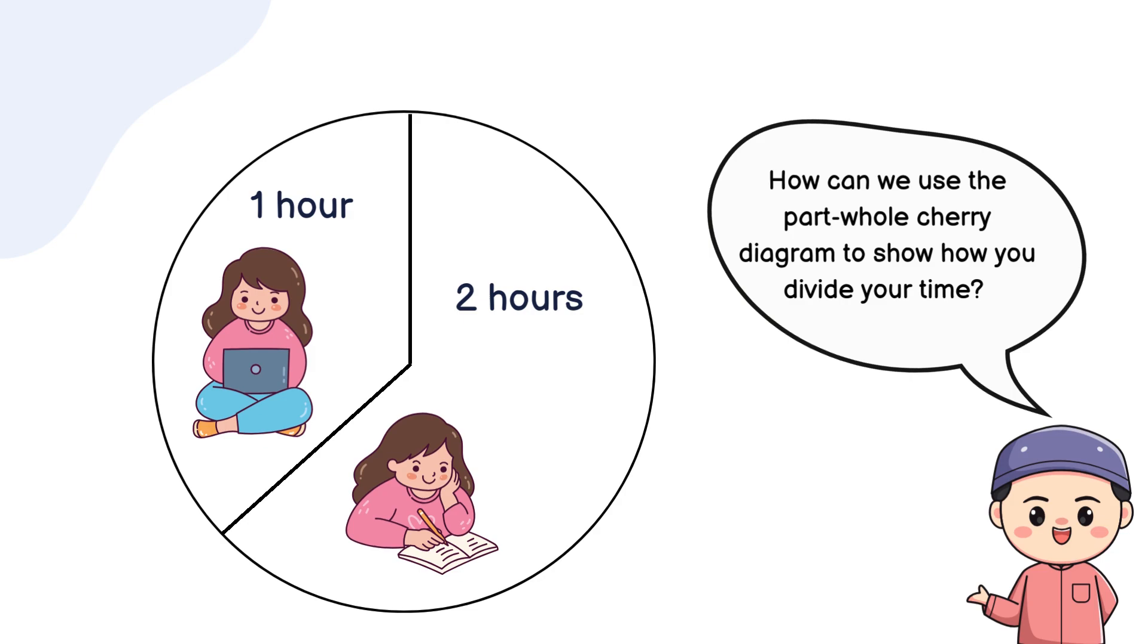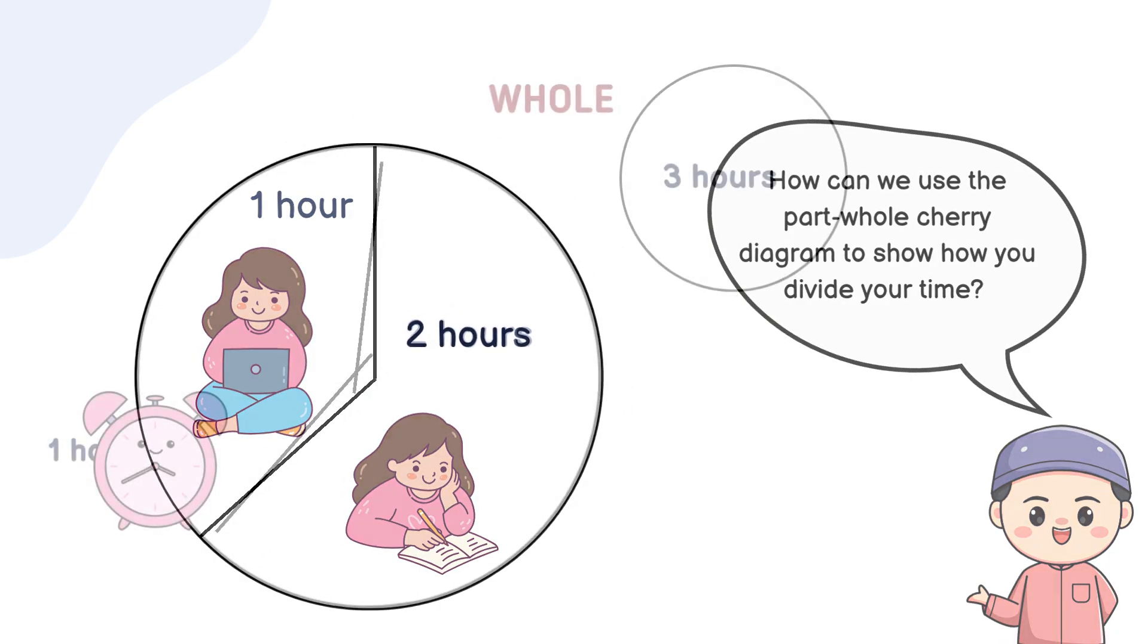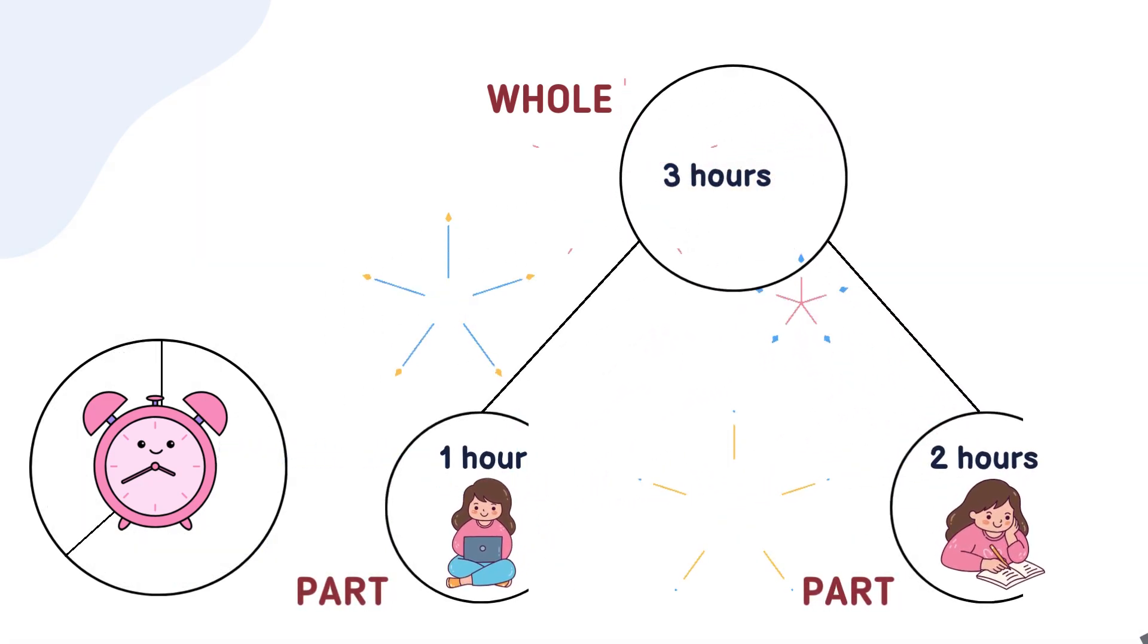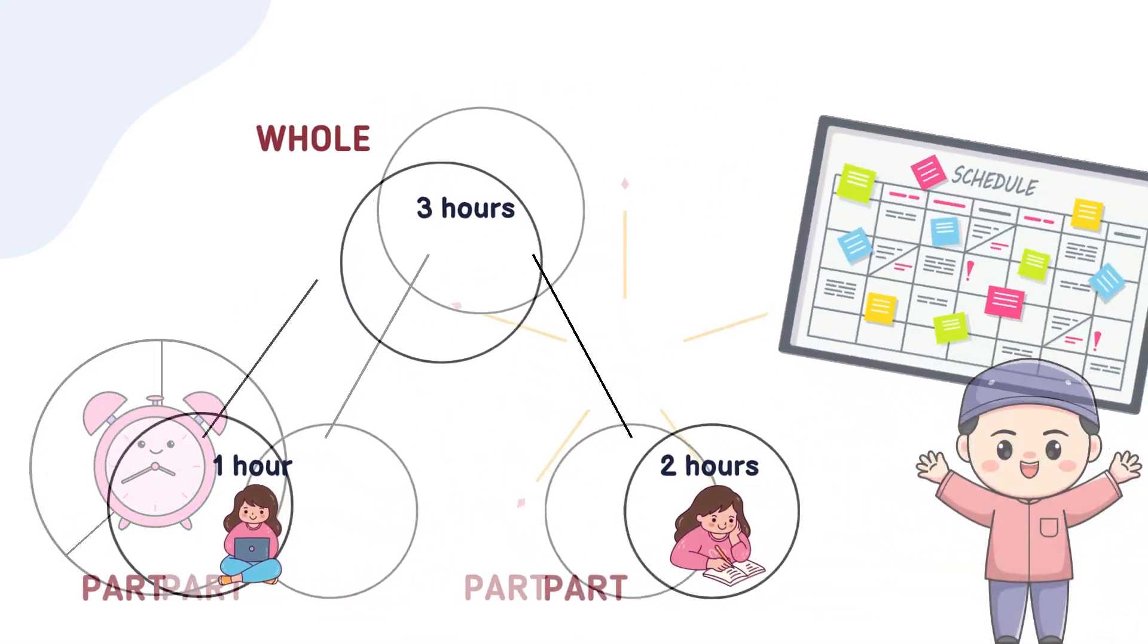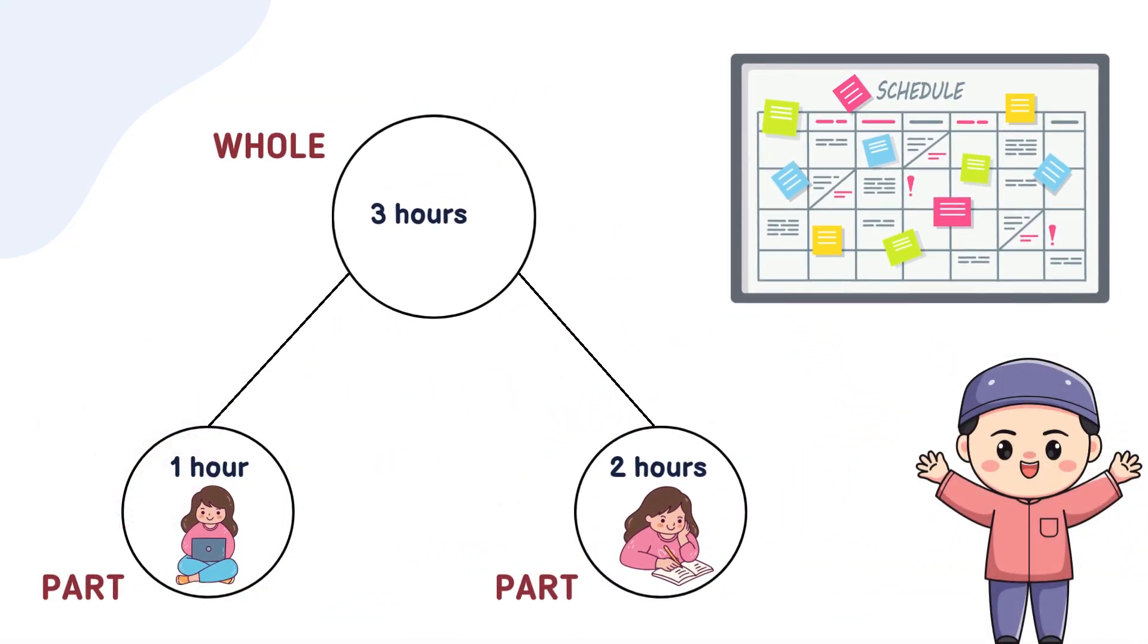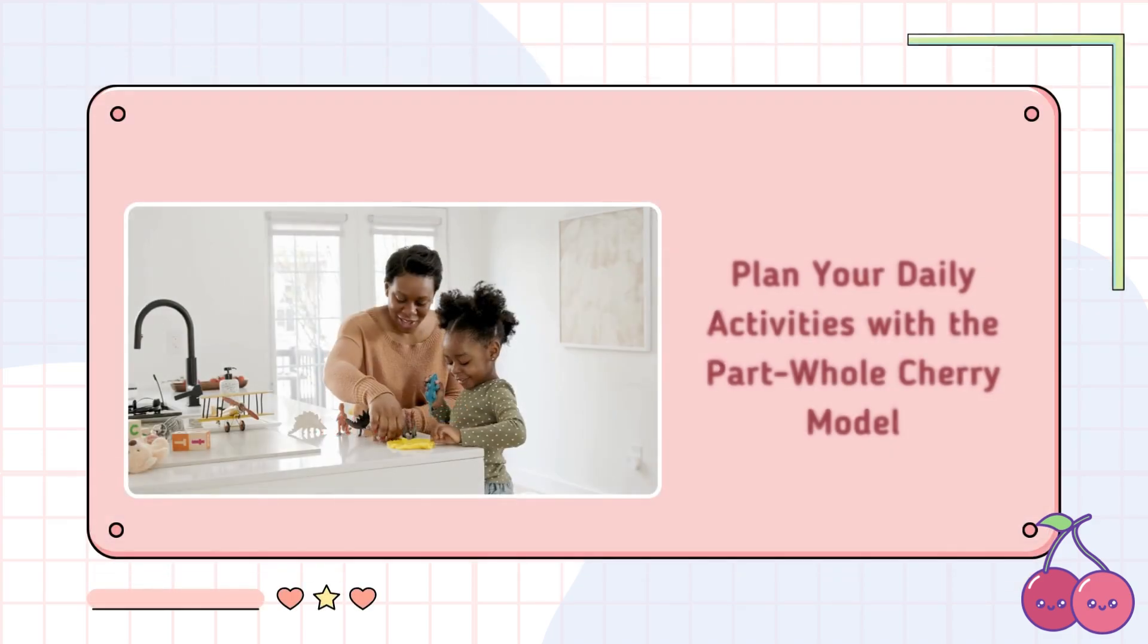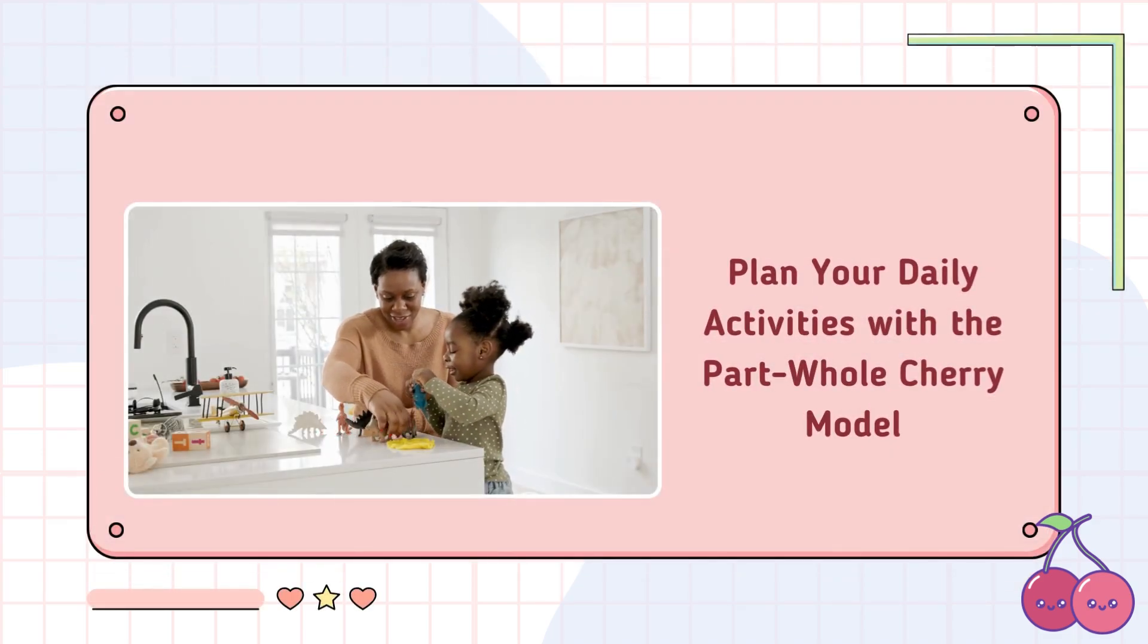Ready to check your answer? Let's see how you did. The whole is your total time, 3 hours. The parts are 2 hours for homework and 1 hour for playing. Easy, right? Using a cherry diagram like this can help you visualize how your time is divided. It's a great tool to see how you balance activities and make the most of your day. Why not try this the next time you're planning your day? It's a fun way to make sure everything fits and you still have time for fun.